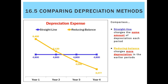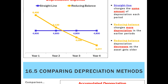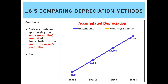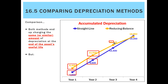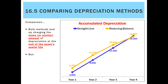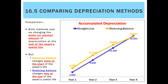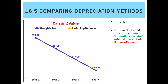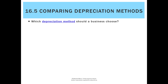On a graph, the reducing balance method charges more at the start — $6,400 — and decreases over time, finishing at $3,277, while straight line stays constant. For accumulated depreciation, straight line rose incrementally each year, while reducing balance accumulated more in the early years but ended up at roughly the same spot. The carrying value tells the same story: straight line decreased evenly, reducing balance dropped more sharply at the beginning but finished at a similar level.